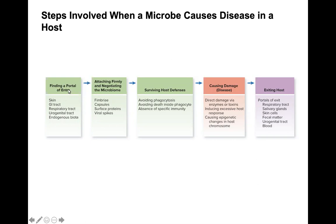The first step is finding a portal of entry. This could be through the skin, GI tract, respiratory tract, genital tract, or endogenous biota. Endogenous means these are microorganisms that are currently living on your surfaces as part of your normal flora.